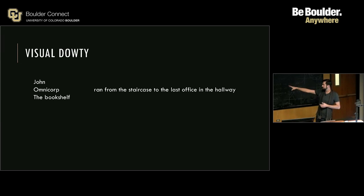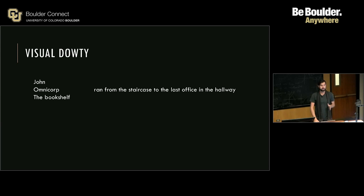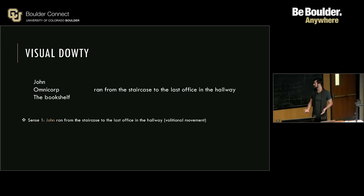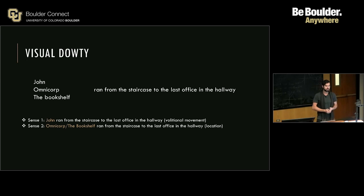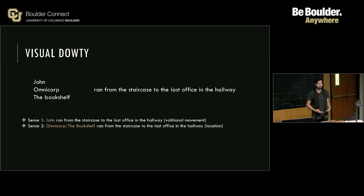So you'll notice we have three different subjects, and then 'ran from the staircase to the last office in the hallway.' A priori, we know that there are two senses given these three different subjects. Sense one is 'John ran from the staircase to the last office in the hallway,' which is a volitional movement frame. We know that because John is an agent that can move. The second sense can be grouped together with Omnicorp and the bookshelf, because both of those really have to do with location. So 'Omnicorp ran from the staircase to the office in the hallway' — they have a lot of offices in a particular building. And then 'the staircase ran from the staircase to the last office in the hallway' — it's a really big bookshelf.